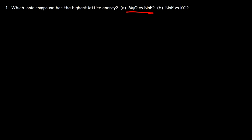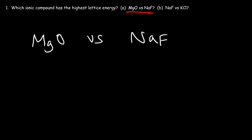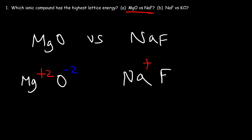Let's compare magnesium oxide with sodium fluoride. Which one is going to have the highest lattice energy? Let's look at the ions found in each compound. Magnesium carries a +2 charge and oxygen carries a -2 charge. Sodium has a +1 charge and fluoride has a -1 charge. We can consider both the charge and the sizes of the ions, and I like to give priority to the charges first. Let's see which compound has a higher product of q1 times q2.